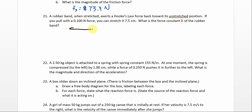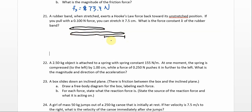So it's like we have a rubber band, and let's say that's what it looks like normally, but we're stretching it by 7.5 centimeters. And we want to know what the k is — the force constant of the rubber band. But it is a Hooke's Law force, so it acts like a spring, and spring force is minus kx.